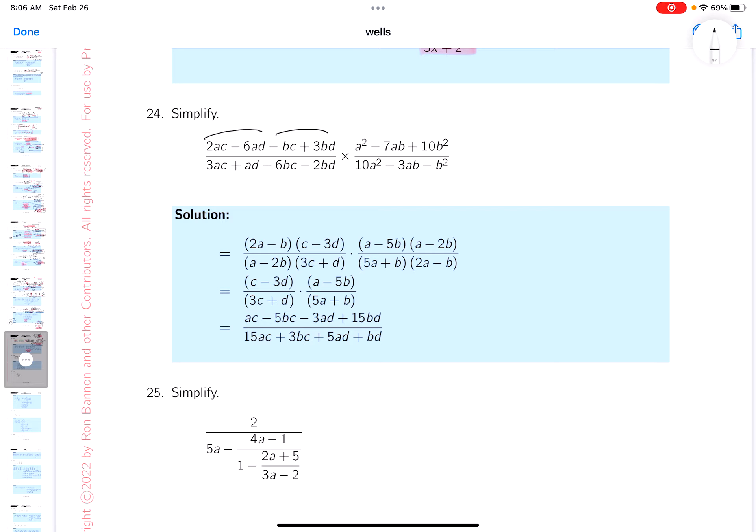If I group the first two terms, looking at it, what factors out? Certainly a 2 and an a does. Then what are you left with? We're left with c minus 3d. Let's do the next one. Minus - I'm looking at that, I'm going to say b factors out.